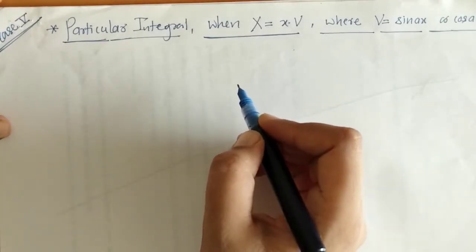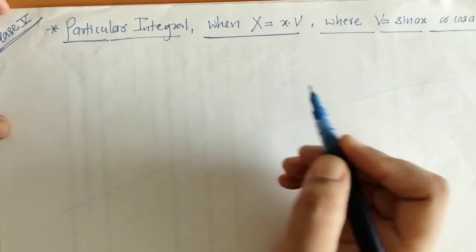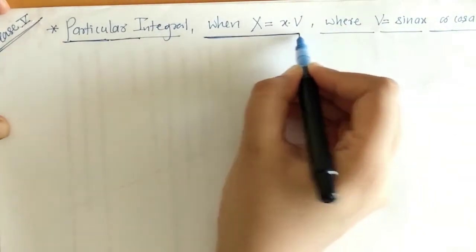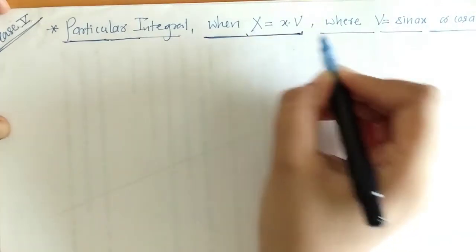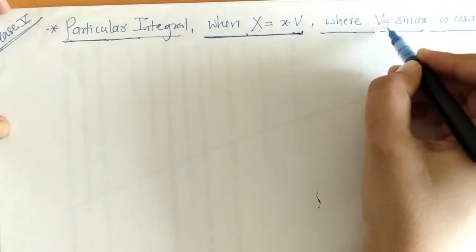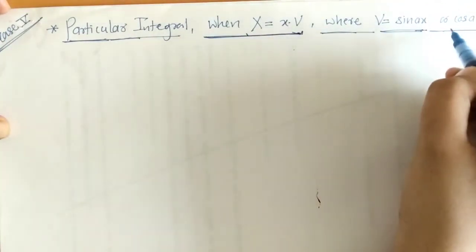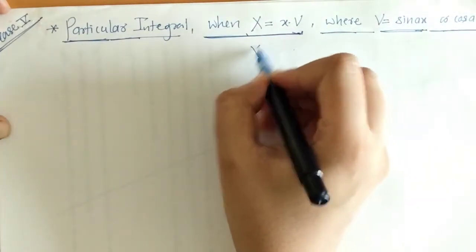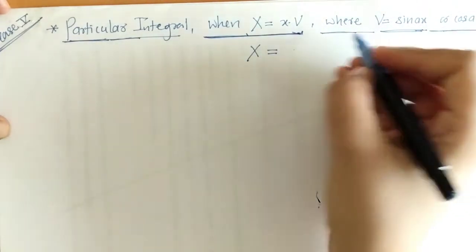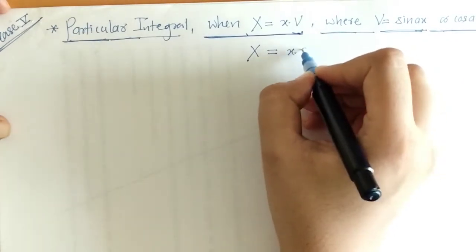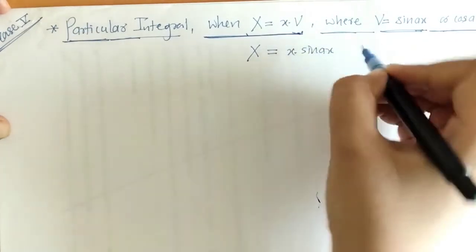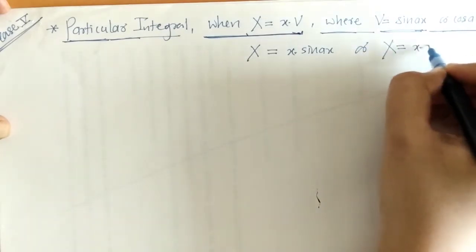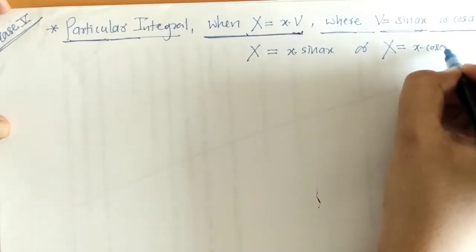Hello everyone, welcome to Unlock Maths. Today we will find the particular integral (PI) when the function X equals x·v, where v is sin(ax) or cos(ax). That means X is of the type x·sin(ax) or x·cos(ax). Here the degree of x is 1.